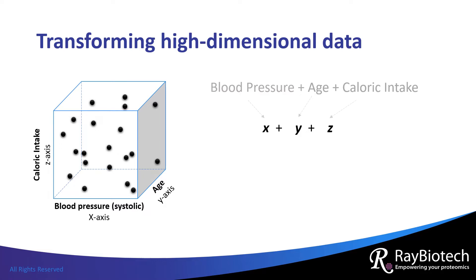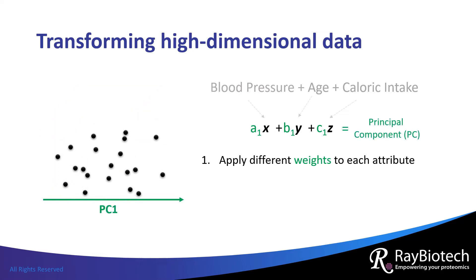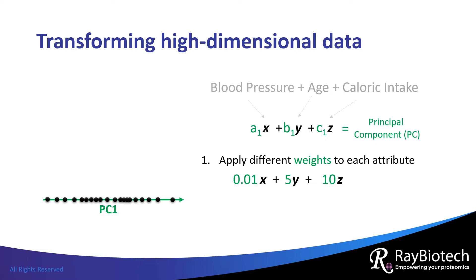PCA applies different weights to each attribute after analyzing all samples. By doing this, the coordinate of each patient is no longer in the standard XYZ space, but in a principal component space. Here, blood pressure is weighted the least while caloric intake is weighted the most. Then, the sample similarity or dissimilarity can be determined using the new principal component, or PC, coordinates.